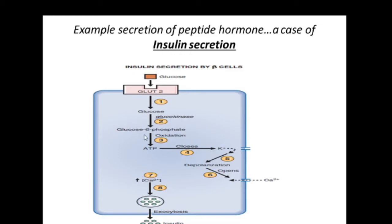The glucose-6-phosphate is oxidized to form ATP. The end product is ATP. ATP then closes the potassium channels — particularly the sulfonylurea subunit of the potassium channel, which we learned about in pharmacology.